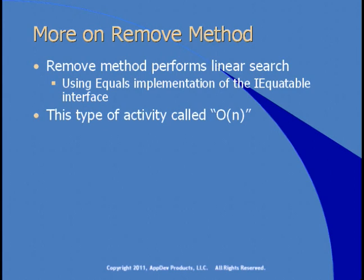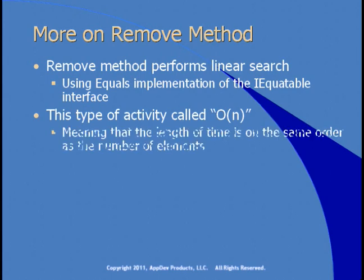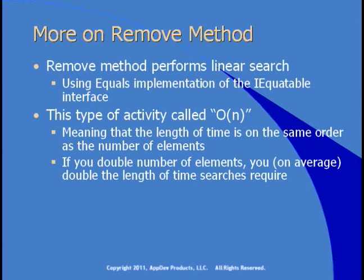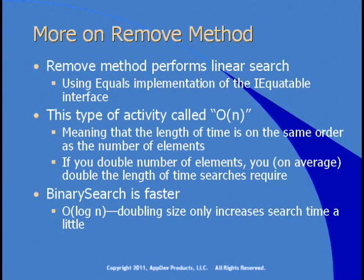The remove method performs a linear search — O(n) — meaning the length of time to perform the search is on the same order as the number of elements. If you double the number of elements, you on average double the search time. Binary search is faster — O(log n), that's log base 2 — so doubling the size only increases search time a little, because binary search divides the list in half over and over again until it zeros in on the item.